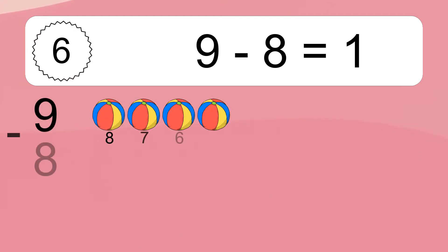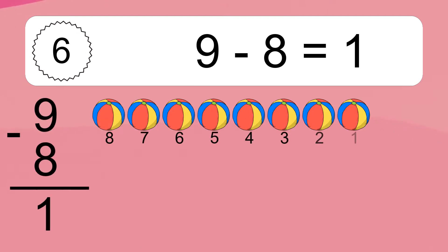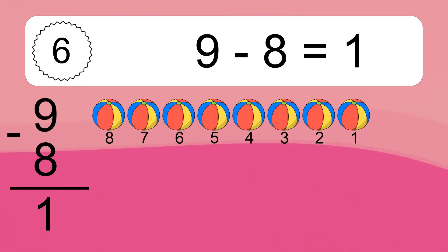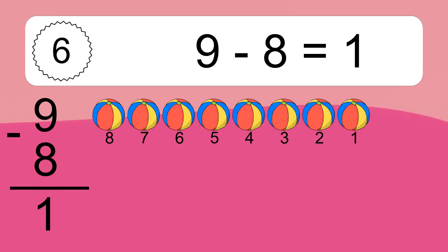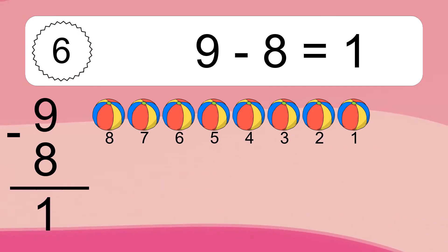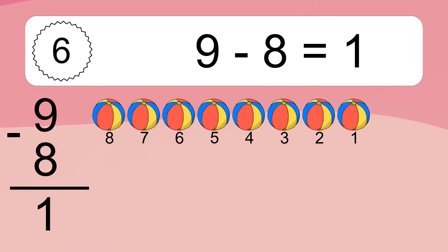9 minus 8 equals what? 9 minus 8 equals 1. Let's count it: 8, 7, 6, 5, 4, 3, 2, 1.